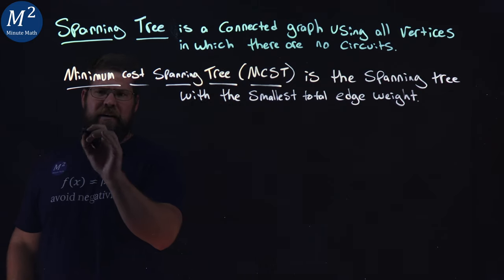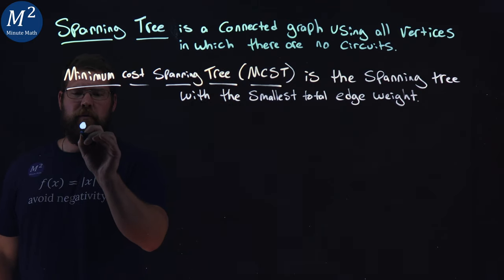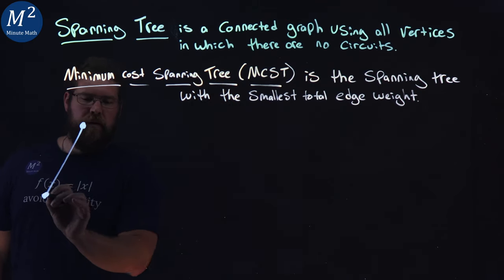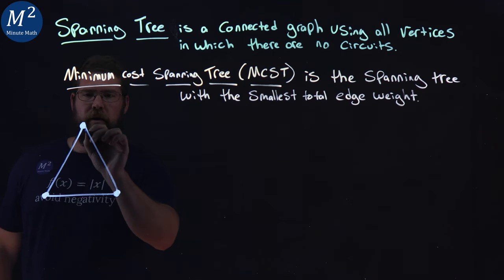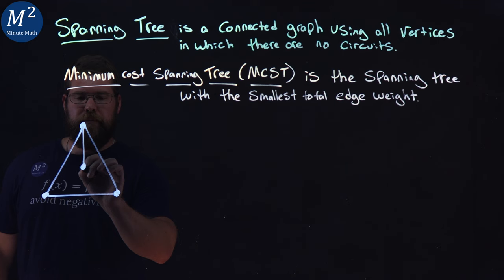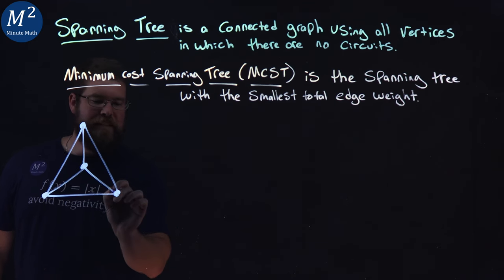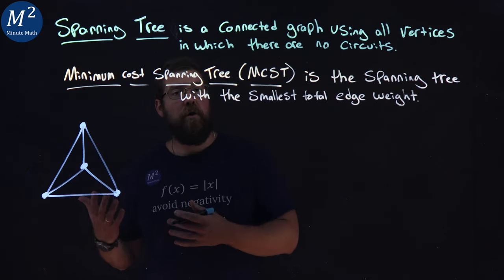So let's say we had a graph like this. We've seen something like this before. It kind of has this triangle shape right there, but then there's something in the middle right here. There are many spanning trees that could occur here.